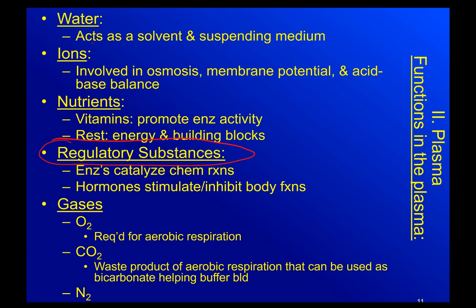Regulatory substances include enzymes and hormones. Enzymes catalyze chemical reactions — they make reactions go faster, use less energy, and happen more easily. Hormones, which we spent two chapters on in unit one, can stimulate or inhibit body functions. Both enzymes and hormones are regulatory because they regulate functions in our body.